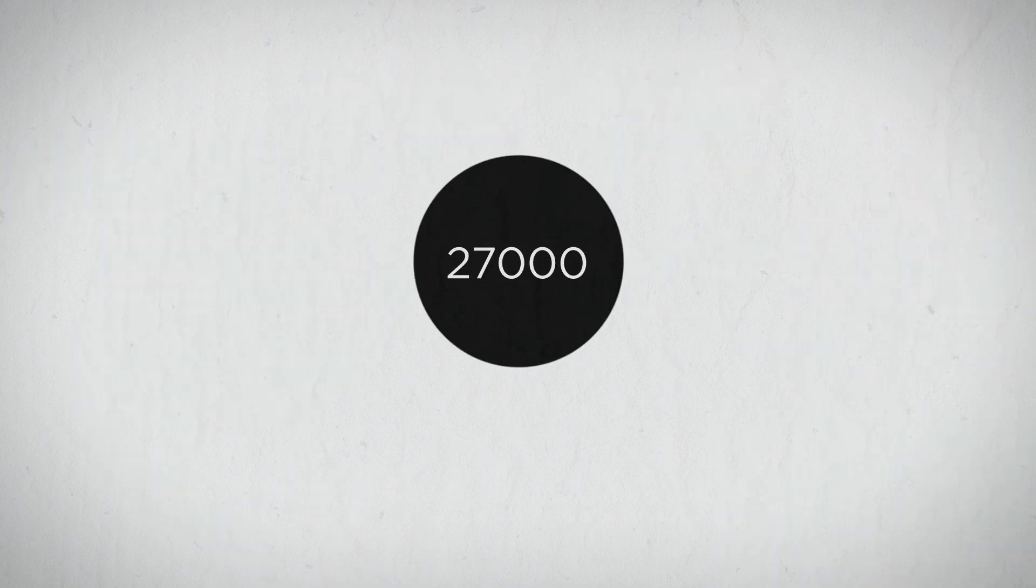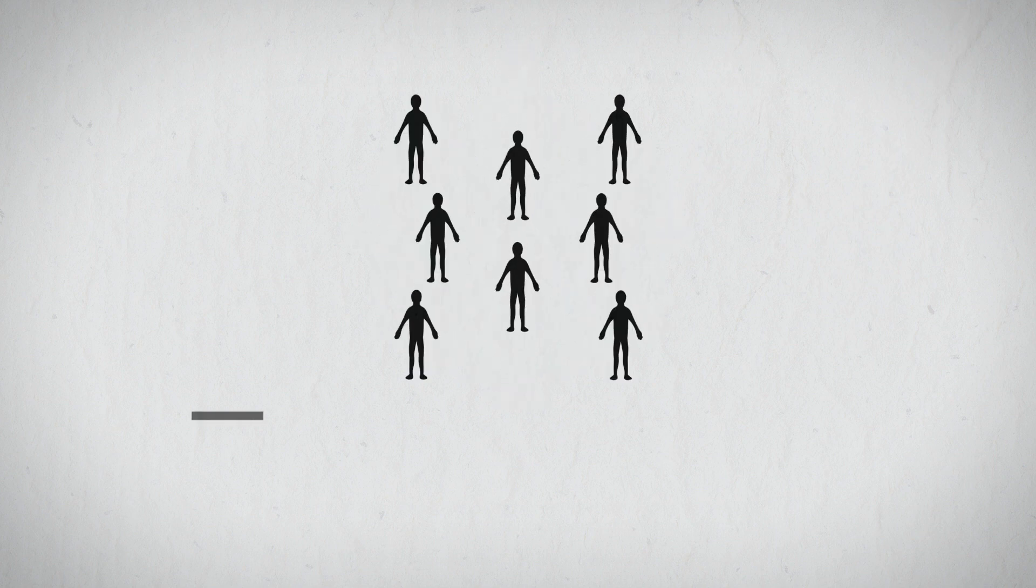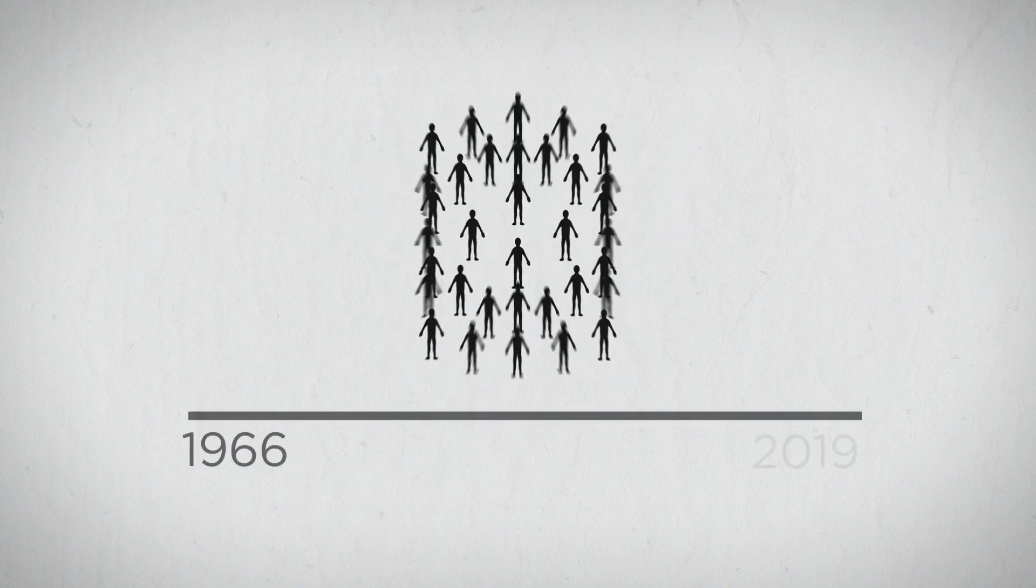Their data therefore includes over 27,000 autistic and non-autistic people studied from 1966 to 2019.